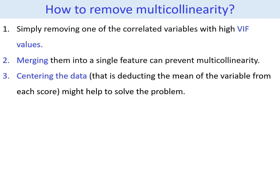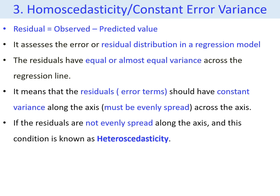The third assumption for a linear regression model is homoscedasticity, also known as constant error variance. To understand this, it is essential to know what residual error refers to. A residual measures the vertical distance of a data point from the regression line or prediction line — in other words, it represents the difference between a predicted value and the actual observed value. In simple terms, the residual is calculated as the observed value minus the predicted value. Homoscedasticity, or constant error variance, involves examining the distribution of residuals to ensure they have equal or nearly equal variance along the regression line.